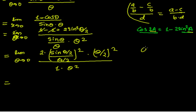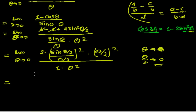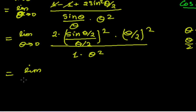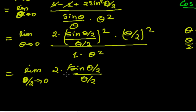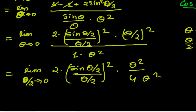When θ tends to 0, θ/2 also tends to 0 — not exactly zero, but very very close to zero. So θ/2 behaves the same as zero. Therefore we can write: limit as θ/2 tends to 0 of 2 times sin(θ/2) divided by (θ/2), whole squared, times θ² — that is θ² divided by 4, which I can write out.